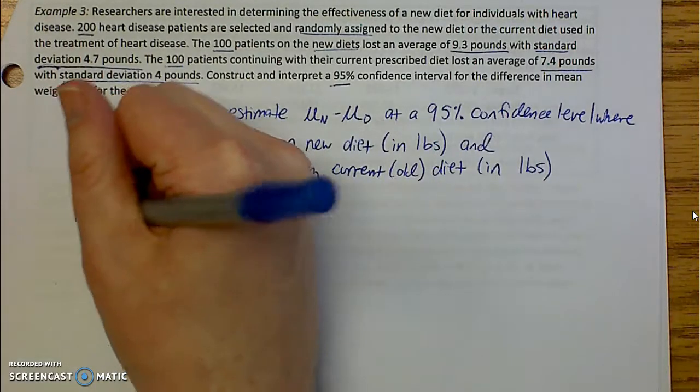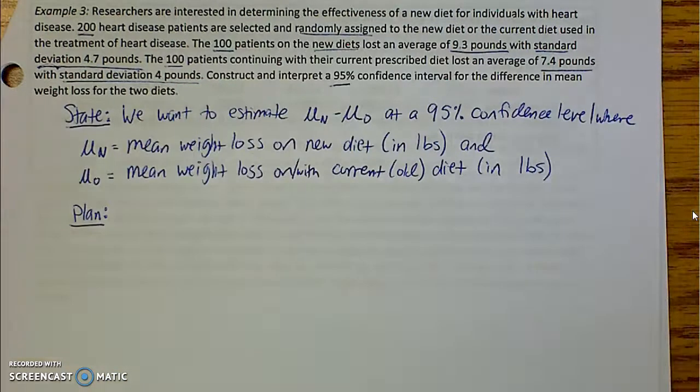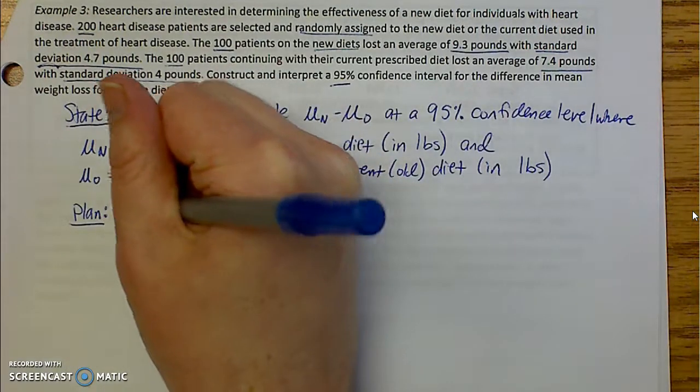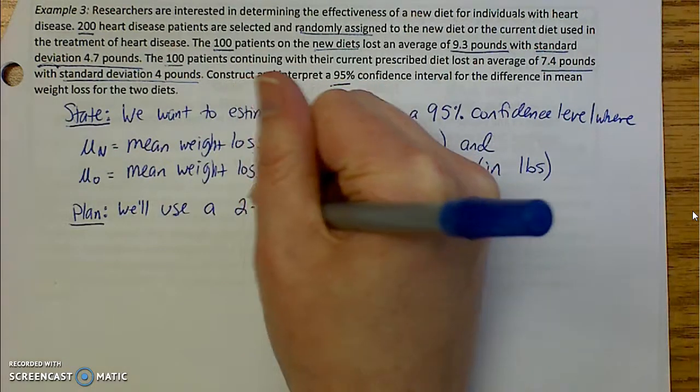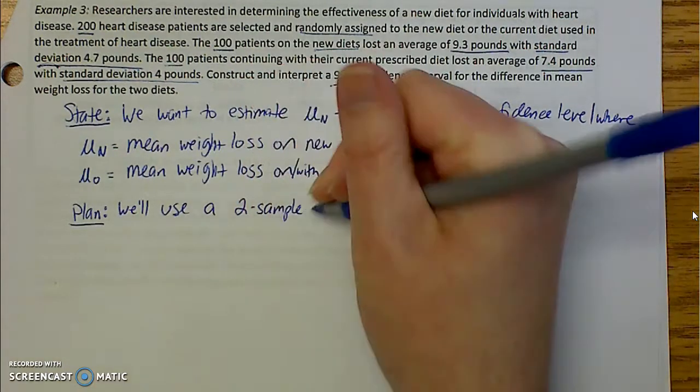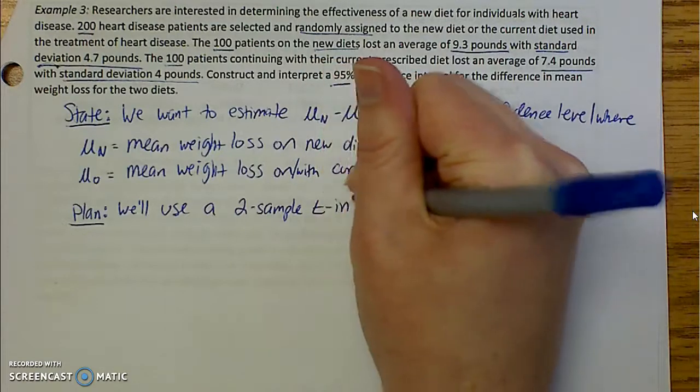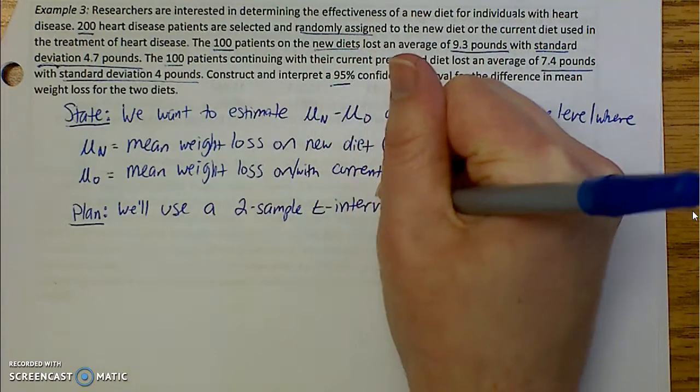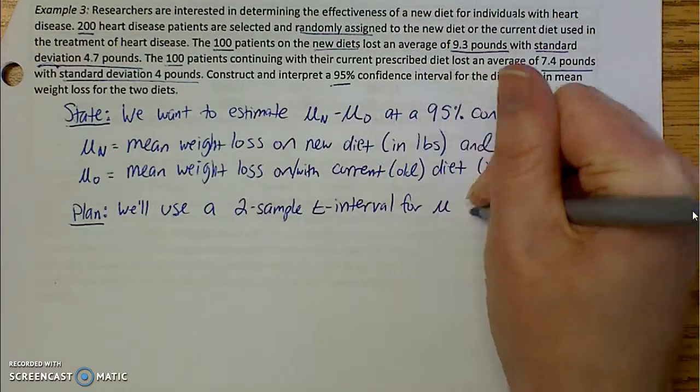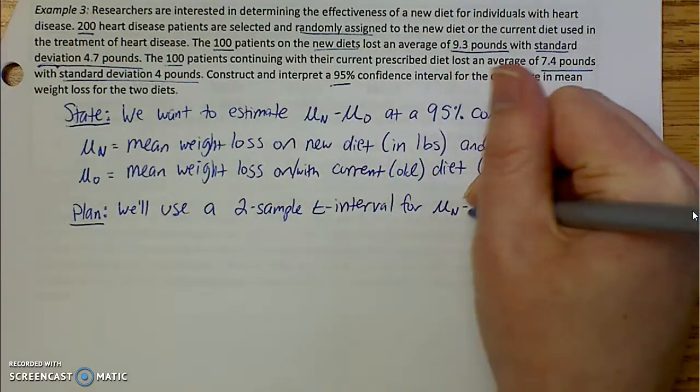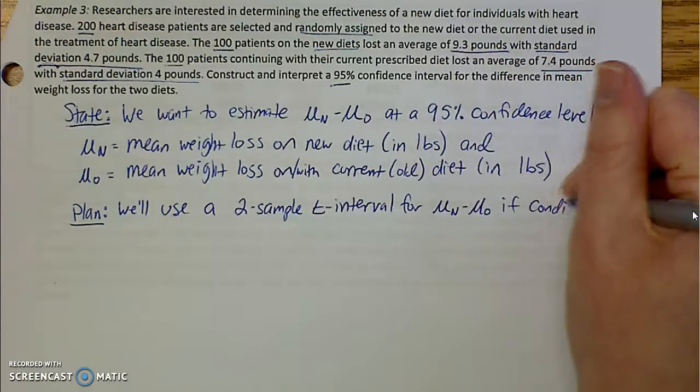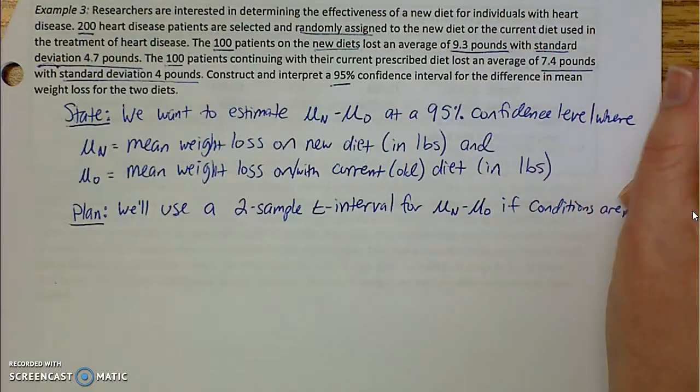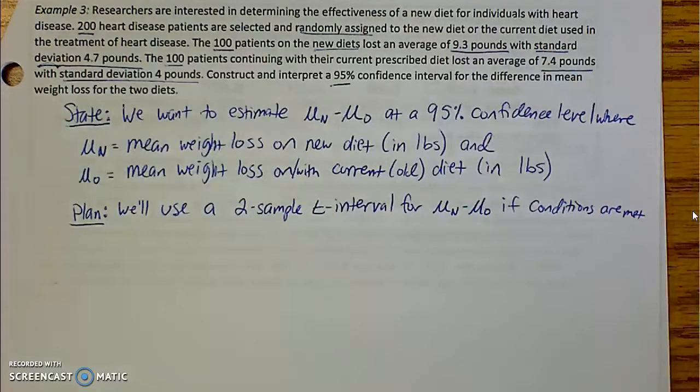So now we plan. We have to go through our conditions after we say what we are going to use. So we will use a two sample T interval for the difference in our parameters if our conditions are met. So now we go through our conditions.